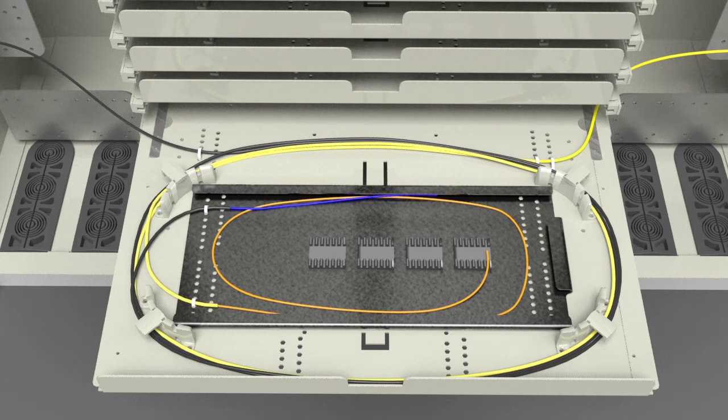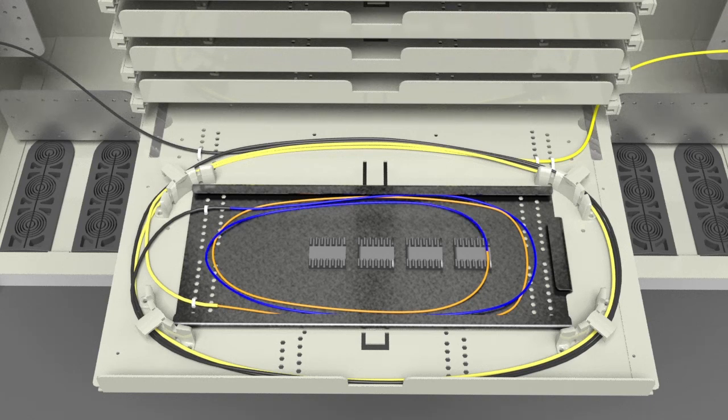Route the OSP fiber breakout one and a half times around the inside of the splice tray to match the IFC fiber breakout.